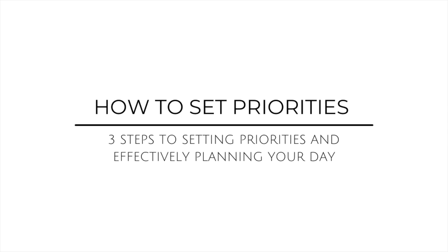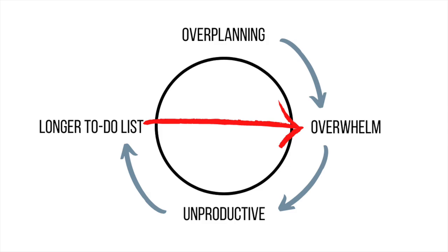Before we dive in, I want to talk about the planning loop that we all tend to get in. We over-plan our day — we have these giant to-do lists, all these things we're trying to accomplish, which causes us to be overwhelmed. And when I'm overwhelmed I don't want to be productive — I want to take a nap. It doesn't motivate me or inspire me; it actually paralyzes me. And when we're unproductive, our to-do list just gets longer and longer, which then causes more overwhelm.